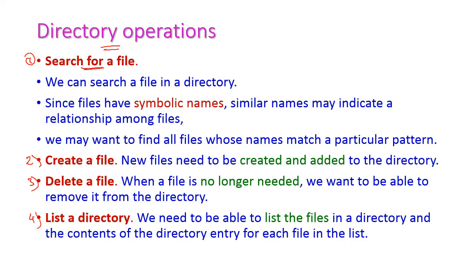First, let us see search for a file. We can easily search for a particular file in the directory. Every file has a symbolic name — that means all files have a unique name. Similar names may indicate a relationship among files, so if files are related to each other then similar names may be given. Hence we may want to find all such related files, which is also possible using the search operation.